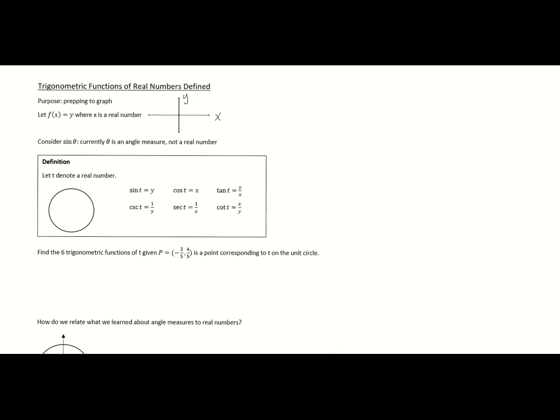We're going to let t denote a real number. Remember that on the real number line, zero is in the middle, and t can go in the positive direction or, if negative, in the opposite direction. We have this length from zero to t, whether in the positive or negative direction.